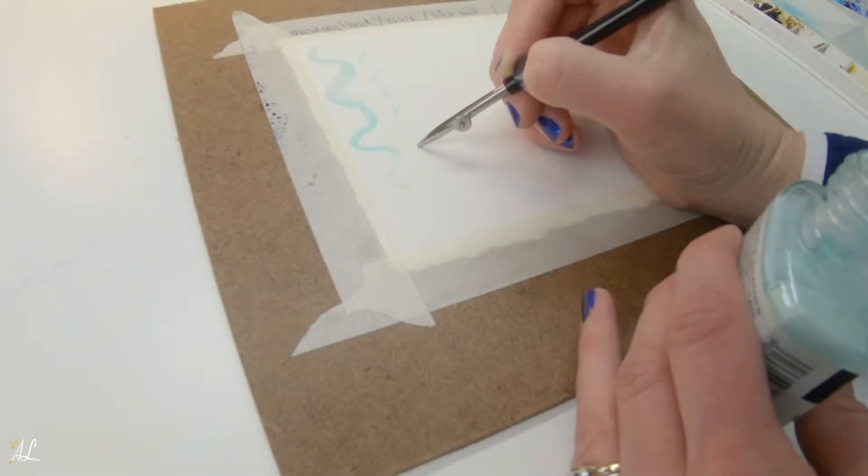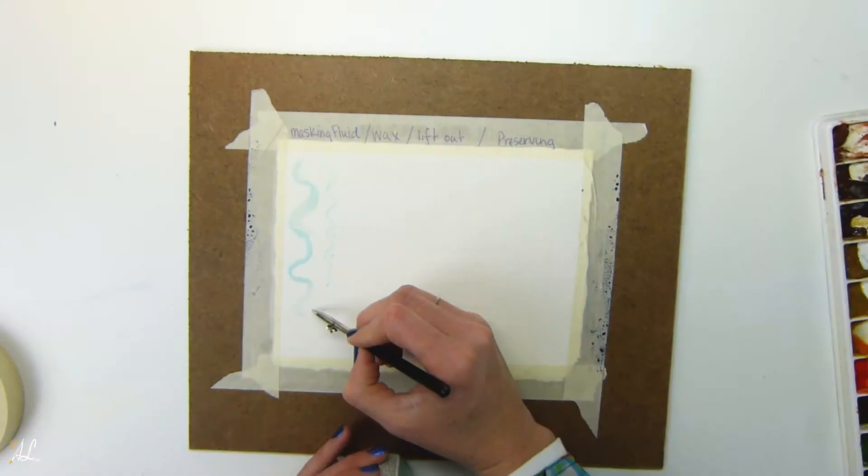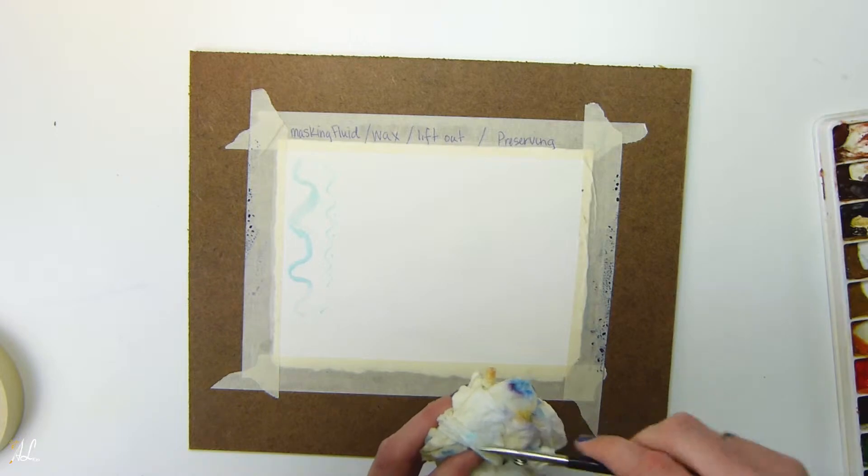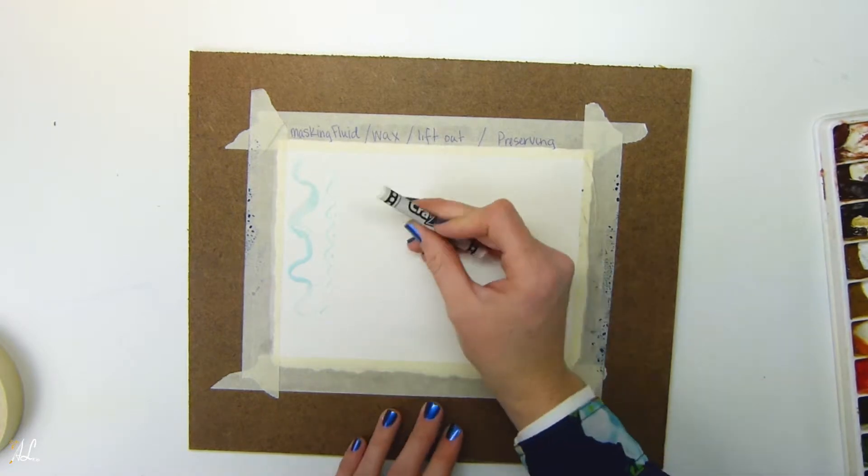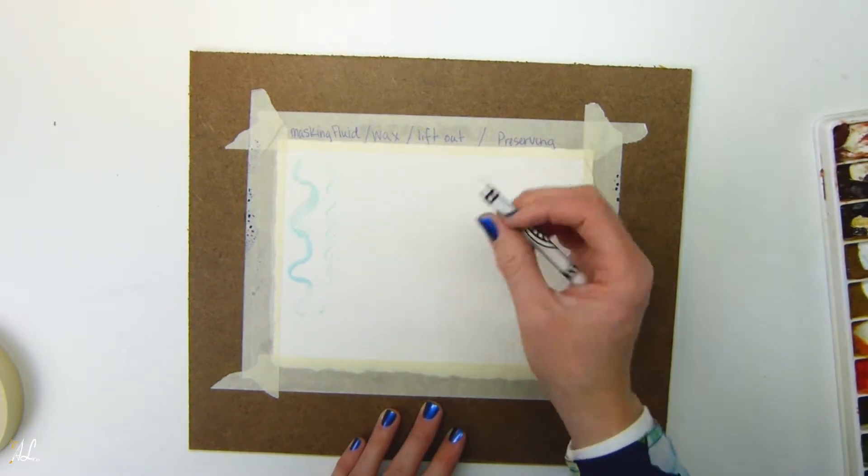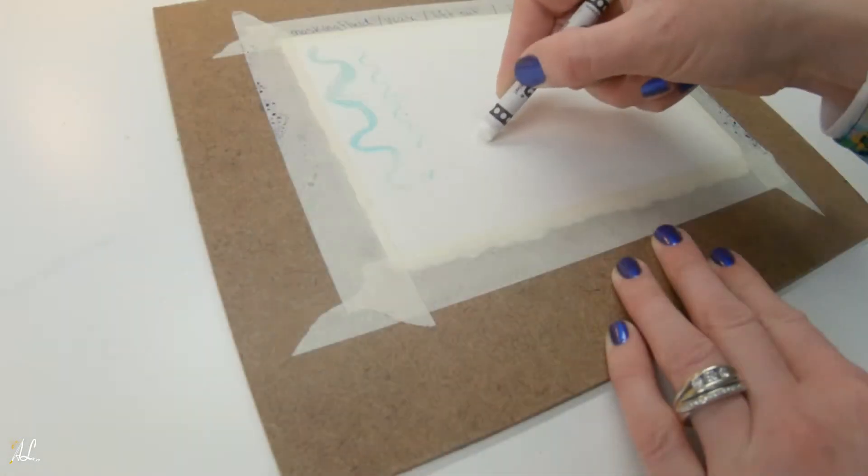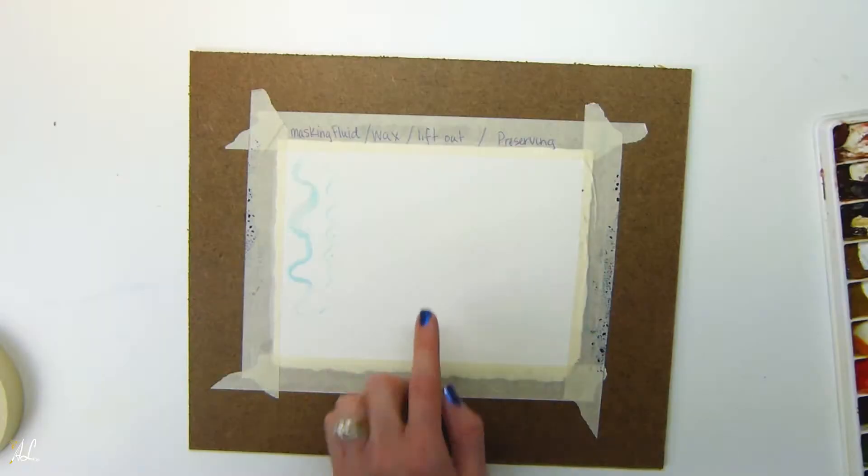This one gets finer lines which is why I like it for small spots, for birds or little things that I want to be very precise with. And then just clean off your dip pen. While that is drying we'll apply our wax. You can either use a white crayon or you can use a candle like a clear or a white candle. You won't be able to see this one yet until I put paint on it.